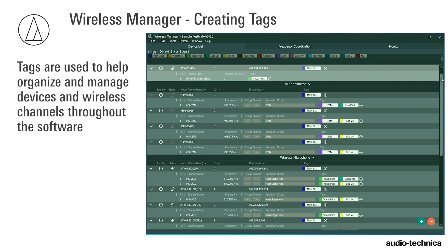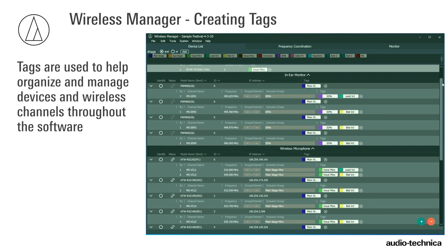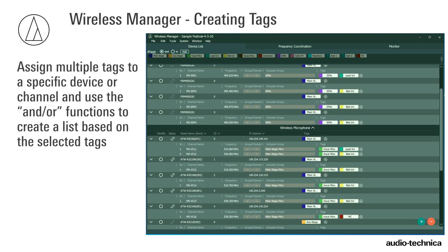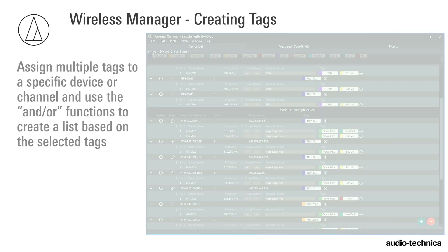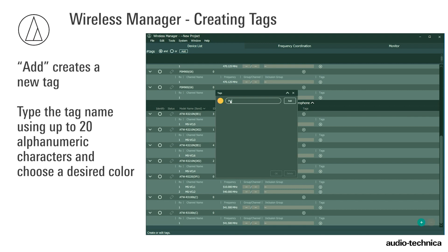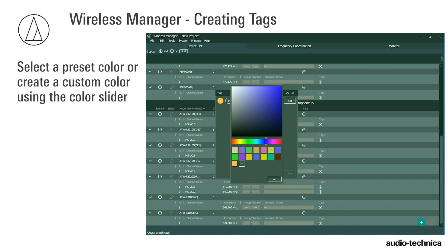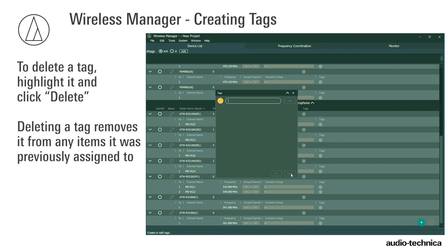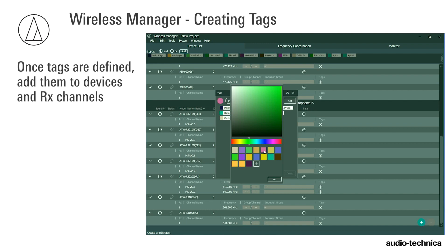Tags are used to help organize and manage devices and wireless channels throughout the software. Assign multiple tags to a specific device or channel and use the AND/OR functions to create a list based on the tags. Add creates a new tag. Type the name of the tag using up to 20 alphanumeric characters and choose a desired color. Select a preset color or create a custom color using the color slider. Click Add to add the tag. To delete a tag, highlight the desired tag and click Delete. Deleting a tag will remove it from any items it was previously assigned to. Once tags are defined, add them to devices and channels.